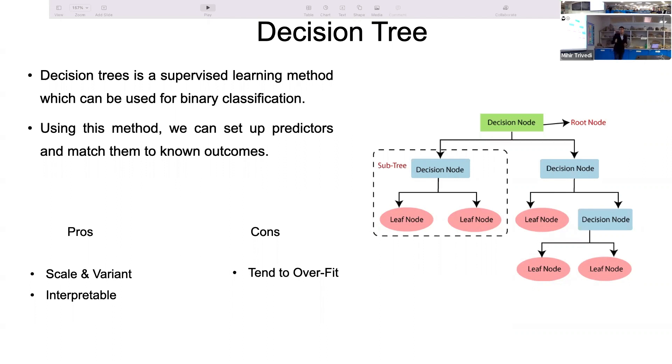One advantage of decision tree is the scale invariance it provides. There are other machine learning algorithms like neural network and SVM in which the input parameters have to be on the same scale. Whereas in decision tree, you can use density, susceptibility, and different input parameters which don't necessarily have to be on the same scale and variant. It is very interpretable, unlike neural network and SVM. It's very easy to explain to somebody who doesn't have a strong foundation of statistics.